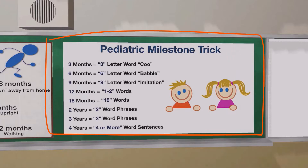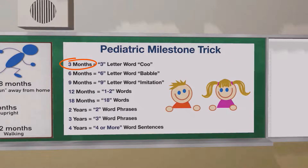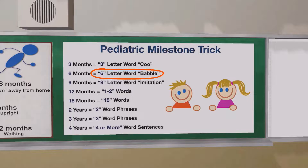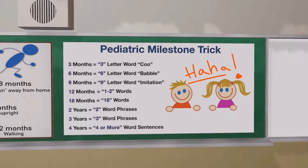Now we get to language — my favorite part. By three months of age, a baby should be able to say "coo," but not yet babbling. Babbling comes at six months of age — we remember this because "babble" has six letters in it. They may also be laughing and squealing at this age.